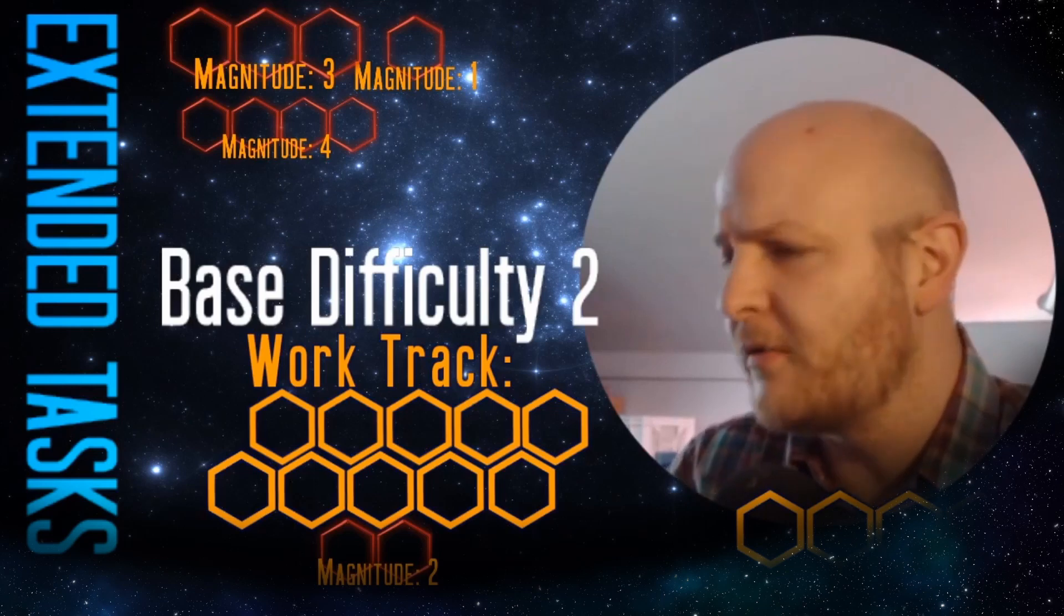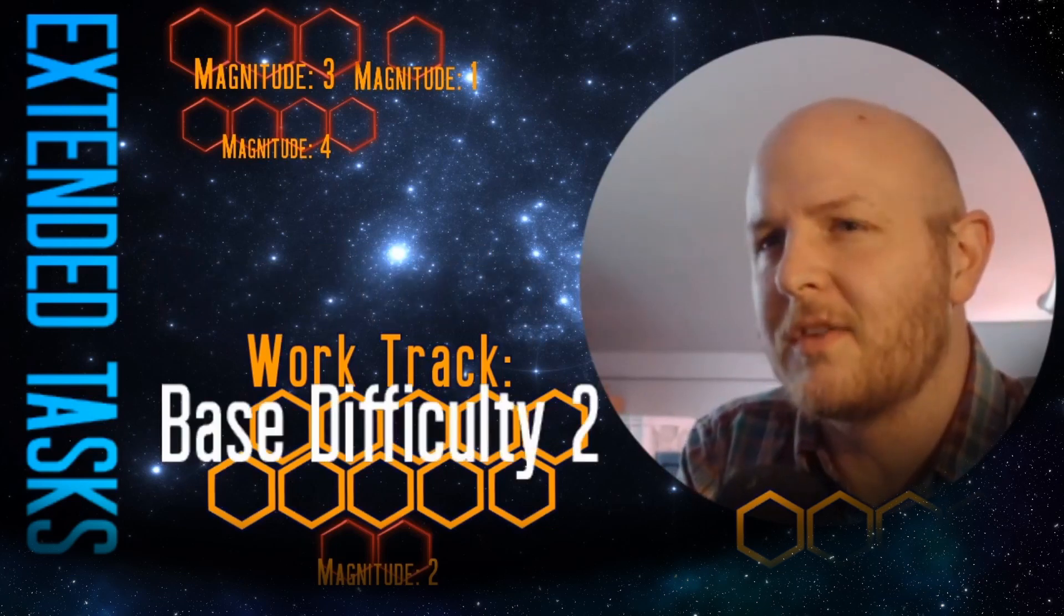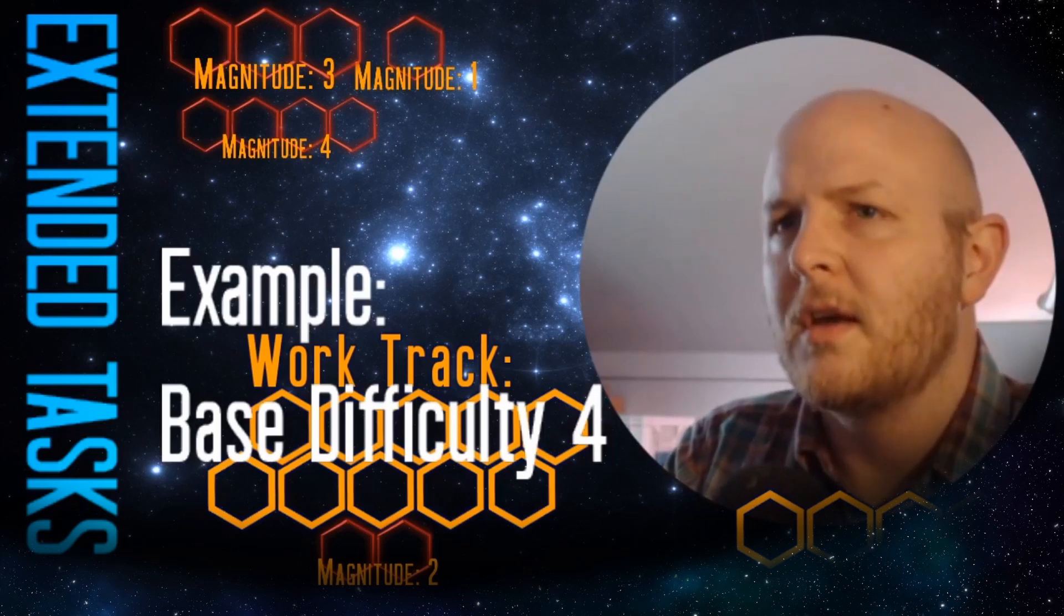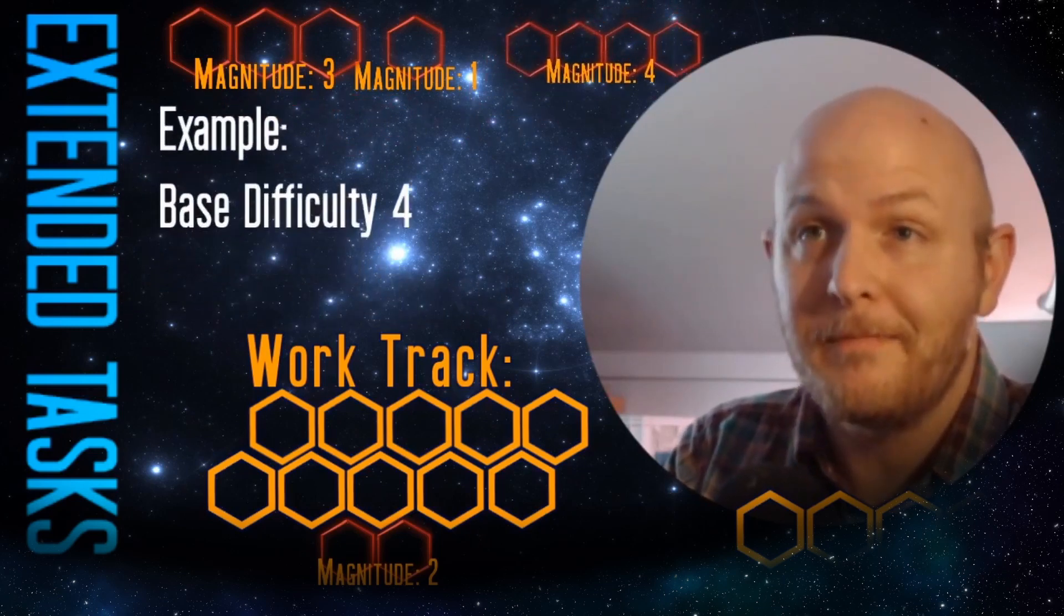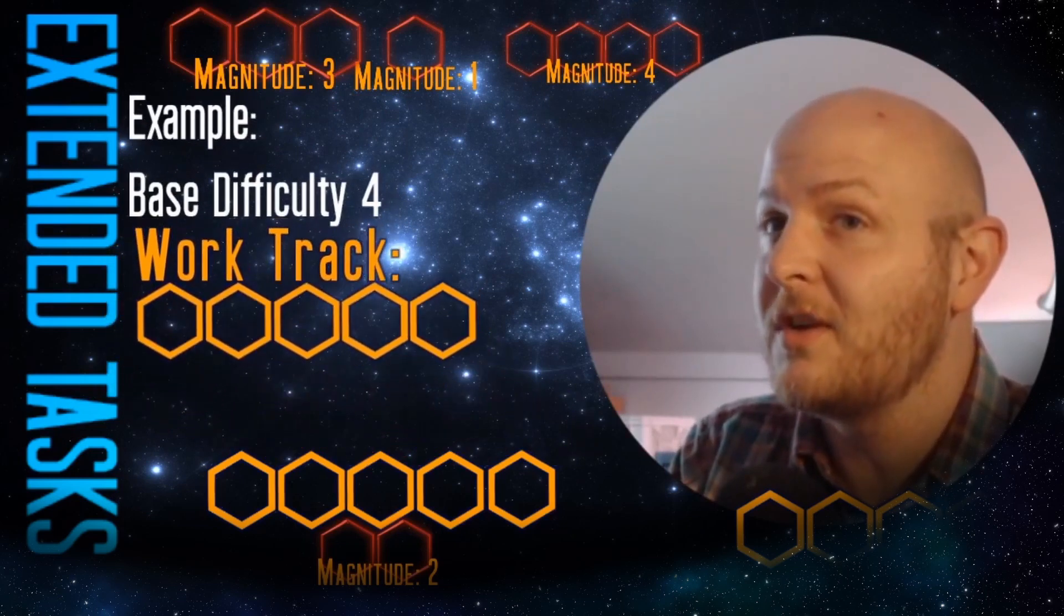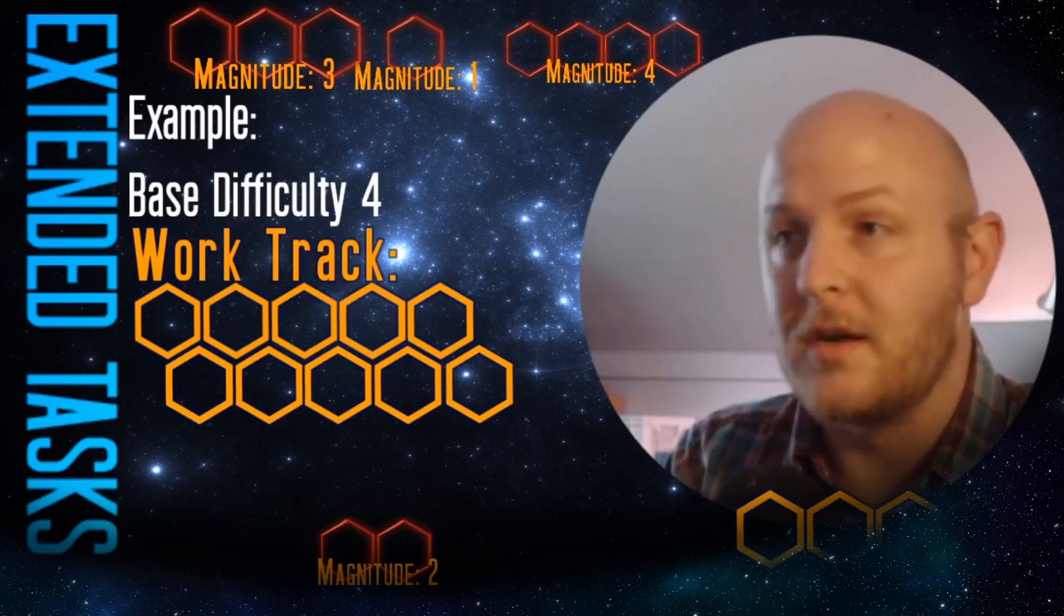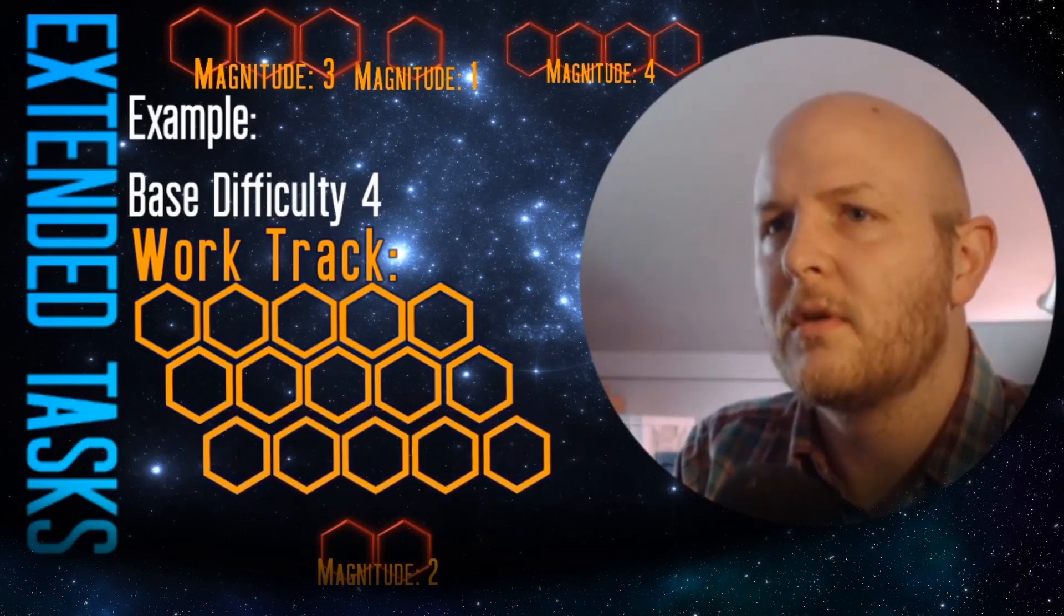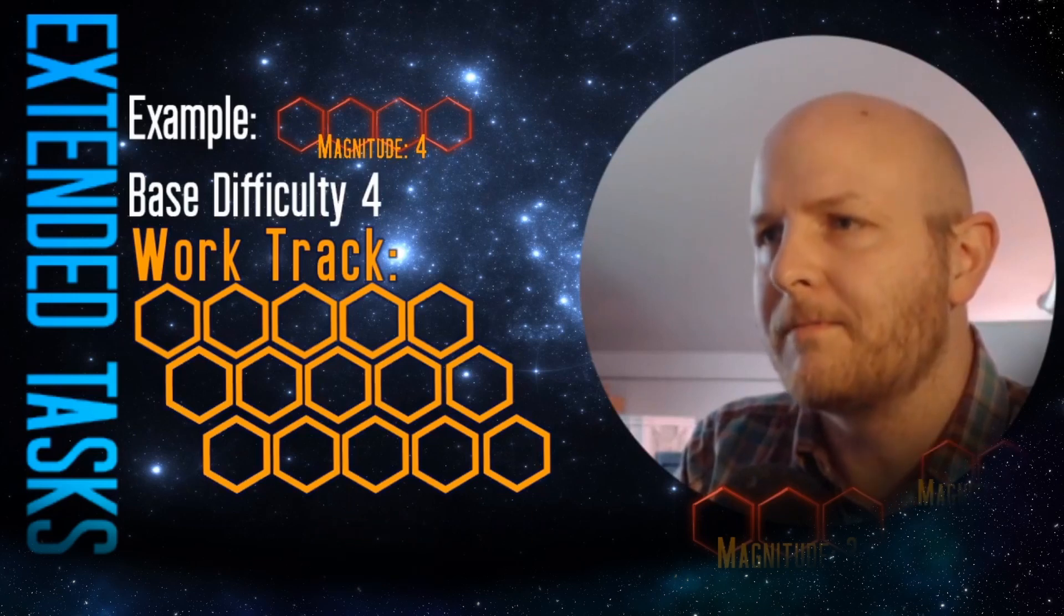Let's get into this example next. I believe the work was 15 on this example. It was magnitude four, base difficulty four, and it had a work track of 15, and they spent determination for the first role. These are hyper competent bridge officers. This is a time sensitive situation. That's the reason that we're invoking the mechanics. So what is the pressure that's mounted against them?